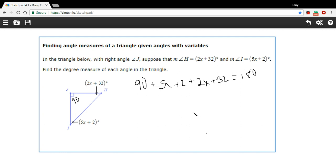So let's do a little simplification here. 90 plus 2 plus 32 is 124, and 5x plus 2x. So this is 7x plus 124 equals 180.